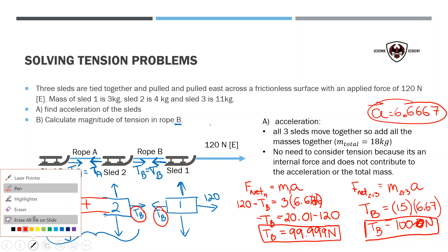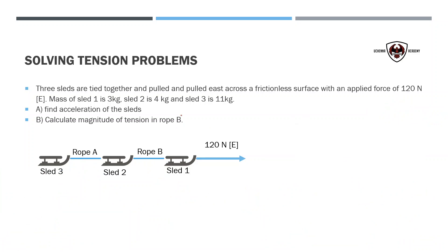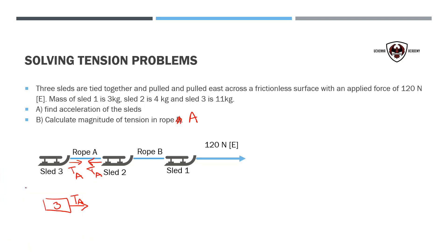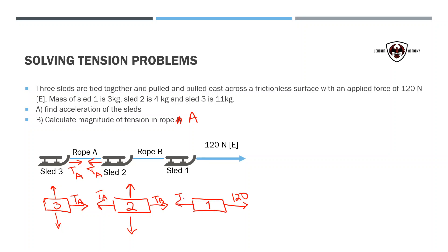Now let's find tension in rope A, even though the question doesn't ask for it. For sled 3's free body diagram, there's tension rope A — no friction in this problem. Sled 2 has tension in rope A and tension in rope B on the other end, plus gravity and normal force. Sled 1 has 120 newtons one way and tension B the other way. I can use two different free body diagrams to find tension A — either sled 3 alone, or sled 2 alone, or by combining sleds 1 and 2.